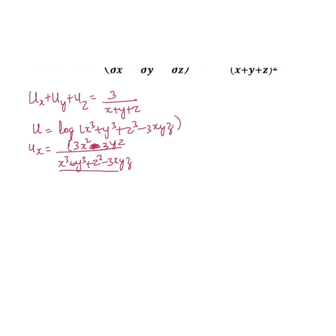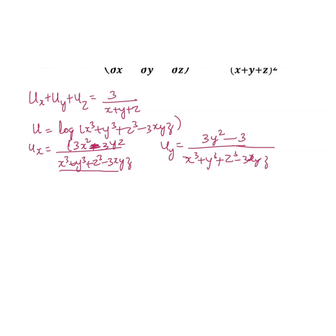Differentiating with respect to y: the denominator remains (x³ + y³ + z³ − 3xyz). The numerator gives 3y² from differentiating y³, x³ and z³ become 0, and −3xyz gives −3xz since y differentiates to 1 and x and z remain as is.